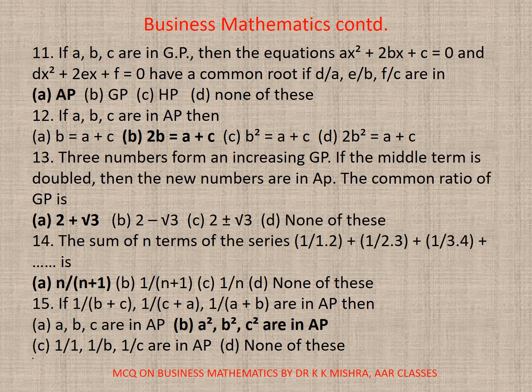Question 13. Three numbers form an increasing GP. If the middle term is doubled, then the new numbers are in AP. The common ratio of GP is, so here correct option is A, 2 plus root under 3. Question 14. The sum of N terms of the series 1/1.2 plus 1/2.3, etc. will be, here correct option is A, N/(N+1).